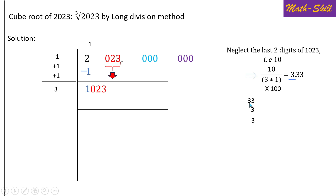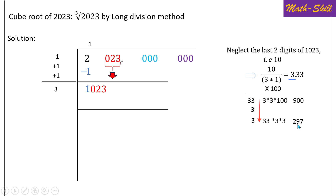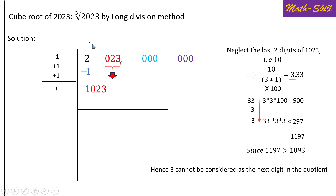Split and multiply: 3 × 100 = 300, and 3² × 100 = 9 × 100 = 900. Also multiply 33 × 3 × 3 = 33 × 9 = 297. Adding 900 + 297 = 1197, which is more than 1023. Therefore, the next digit in the quotient cannot be 3.